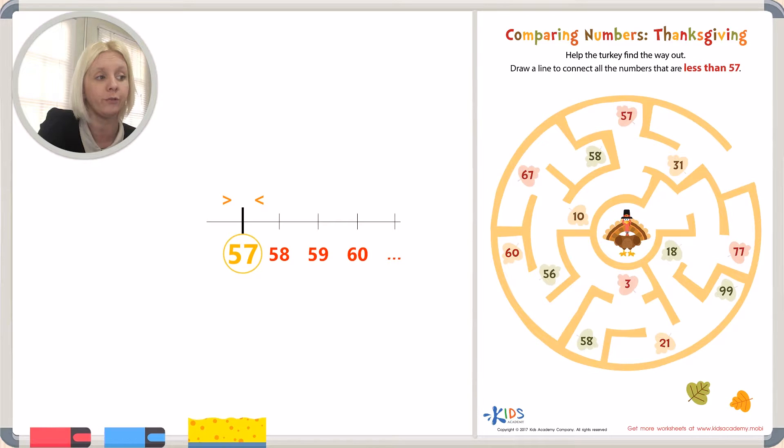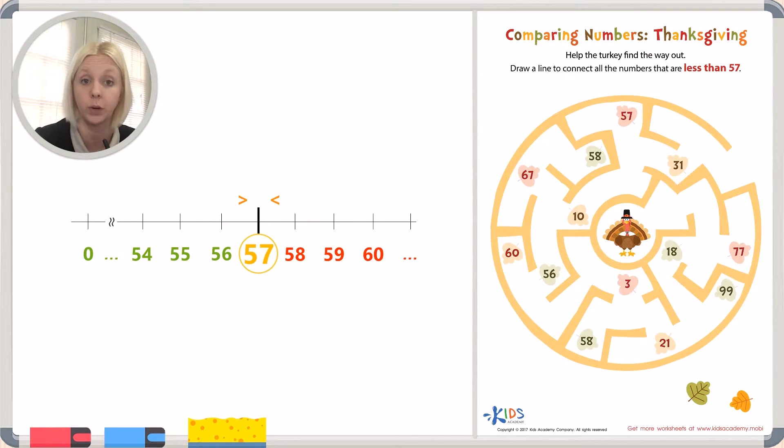For example, 56, 55, 54, 53, and all the way down to zero, and all the numbers that are in between. So we're looking for all the numbers on this side of the number line that are less than 57.